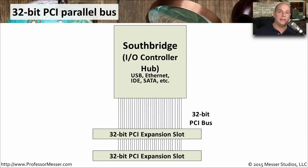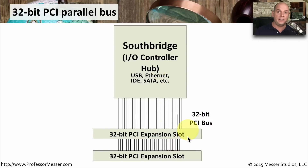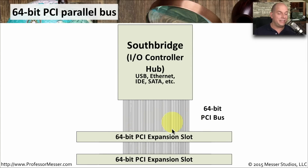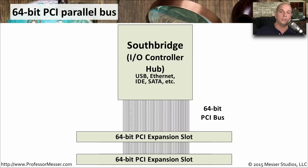When we talk about a PCI bus as being parallel, that means that for a single transfer, all of the bits are transferred at one single time. To do that, we need to communicate across many different connections simultaneously. On a 32-bit PCI bus, we've got 32 connections between the South Bridge and the PCI expansion slots. If it's a 64-bit bus, we need twice as many — 64 lines of communication across that bus. This becomes a challenge as we go faster and need wider buses: we begin to run out of space on the motherboard and it becomes difficult to get data from one side to the other all at once.